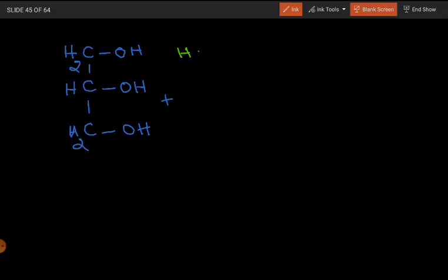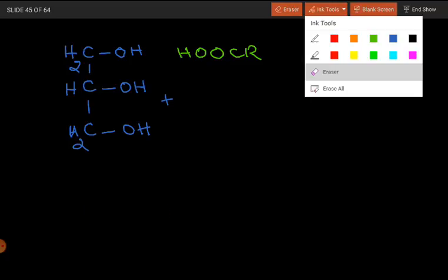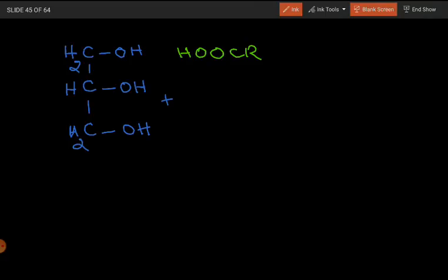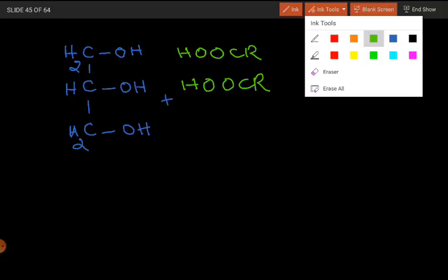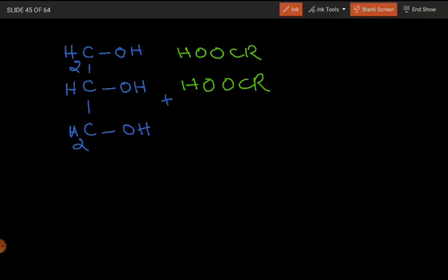We will now look at the fatty acid molecules. The formula for fatty acid is R-COOH. We have two fatty acid molecules in the phospholipid structure. The third component is phosphoric acid, whose formula is H3PO4.